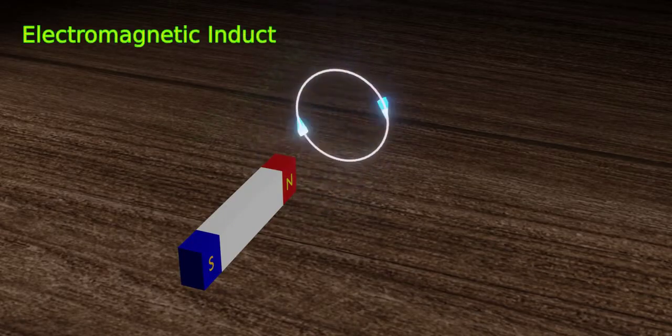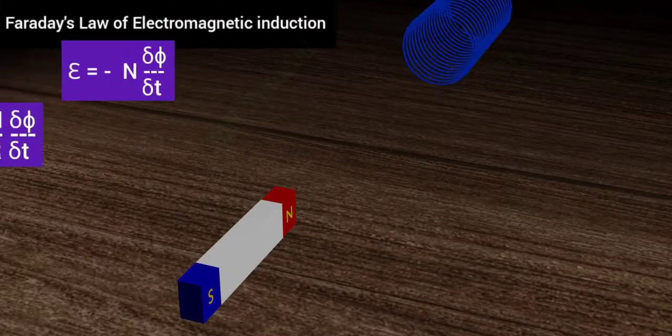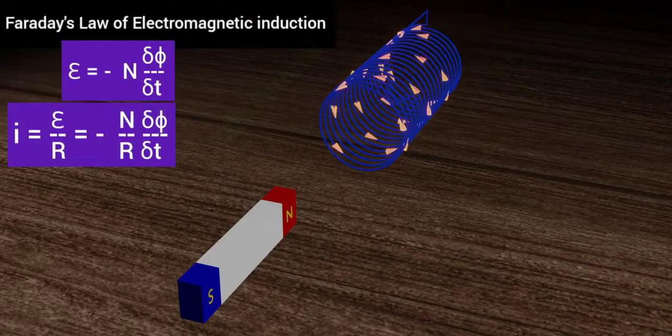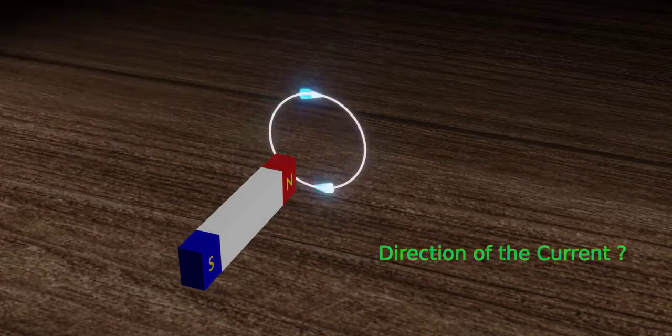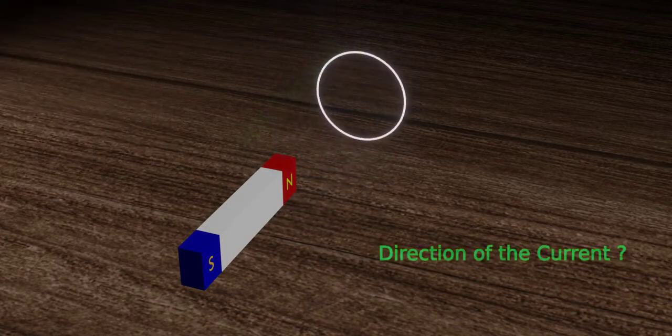The incident is called electromagnetic induction. You can measure the amount of current by using Faraday's law of electromagnetic induction. But what about the direction of the induced current?